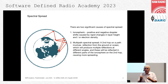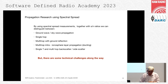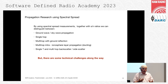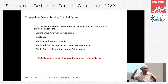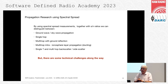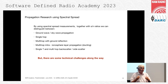By looking at spectral spread, we can start seeing how many hops a signal has taken. Using spectral spread, we can distinguish between ground wave, sky wave propagation, single hop, multi-hop, multi-hop with ground reflection, multi-hop with intra-ionospheric propagation — sometimes called ducting or chordal mode — and also multi-hop backscatter and side-scatter, which are relatively undocumented propagation modes in ham radio.